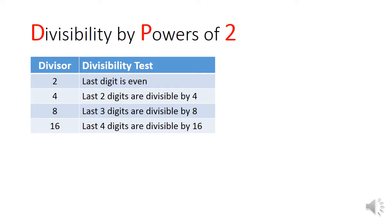Let's begin with divisibility by powers of 2. If the divisor is 2, the test is trivial. You only need to check if the last digit is even. If you want to test for divisibility by 4, you can check the divisibility of the last 2 digits by 4. By 8, we only need to check the last 3 digits. And for 16, we check the last 4 digits. And this goes on.